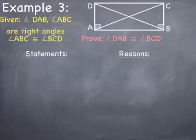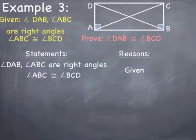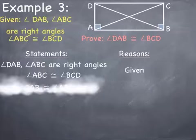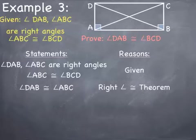Always, when writing a proof, your first statement is your givens, and the reason for your first statement is that it was given to you in the problem. Using the theorem we just talked about — that all right angles are congruent — because I'm told angle DAB and angle ABC are right angles, I can say that angle DAB is congruent to angle ABC by the right angle congruence theorem.